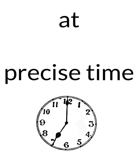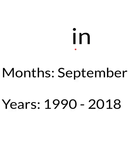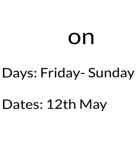So we learned when to use on, when to use in, and when to use at for time. We use at for precise time. We use in for months and years — أستخدم in للأشهر والسنوات. We use on for days and for dates — أستخدمها للأيام والتاريخ.